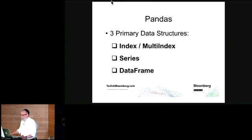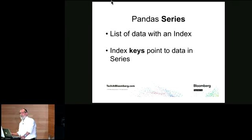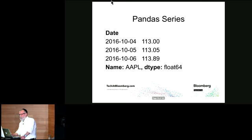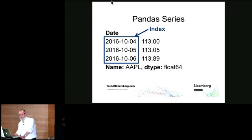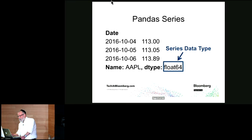If you understand these three primary data structures in Pandas, you understand the core of Pandas: the index or multi-index, series, and data frame. A Pandas index is just a list of keys — essentially a hash table, like a Python dictionary. A series is a list of data that has an index, so you can access that data by key. The parts of a series are: your values, your index (in this case, date objects), a name for your index, a name for your series, and a series data type.